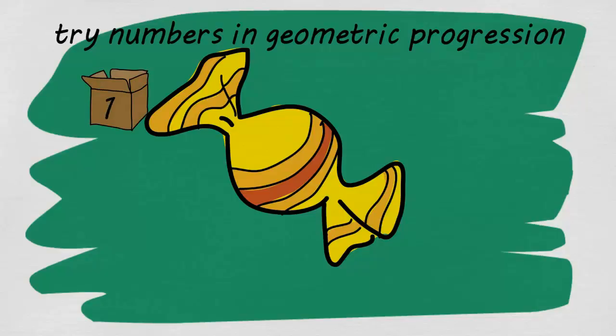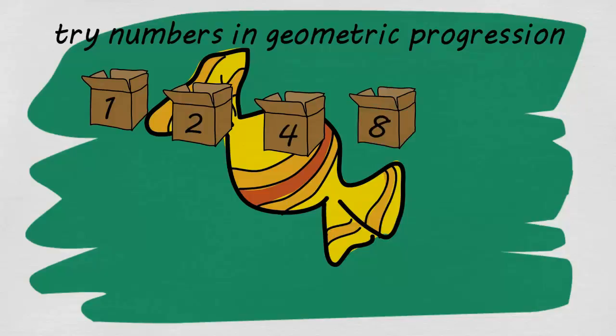Box 1 contains 1 candy. Box 2 contains 2 candies. Box 3 contains 4 candies. Box 4 contains 8 candies. Box 5 will be having 16 candies.